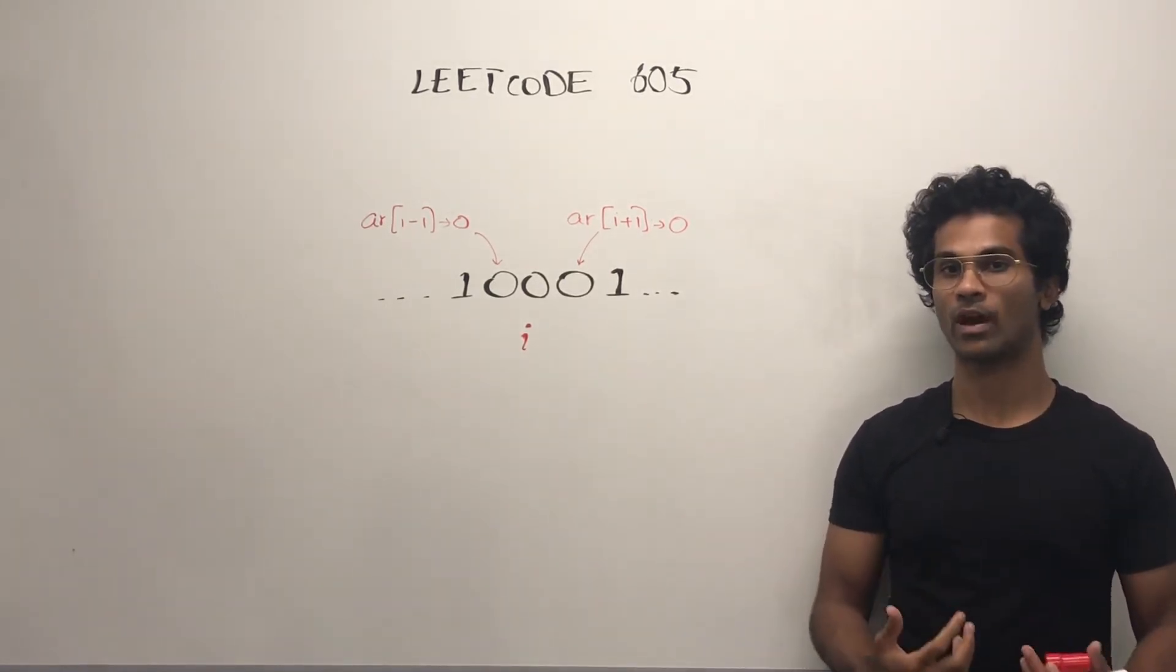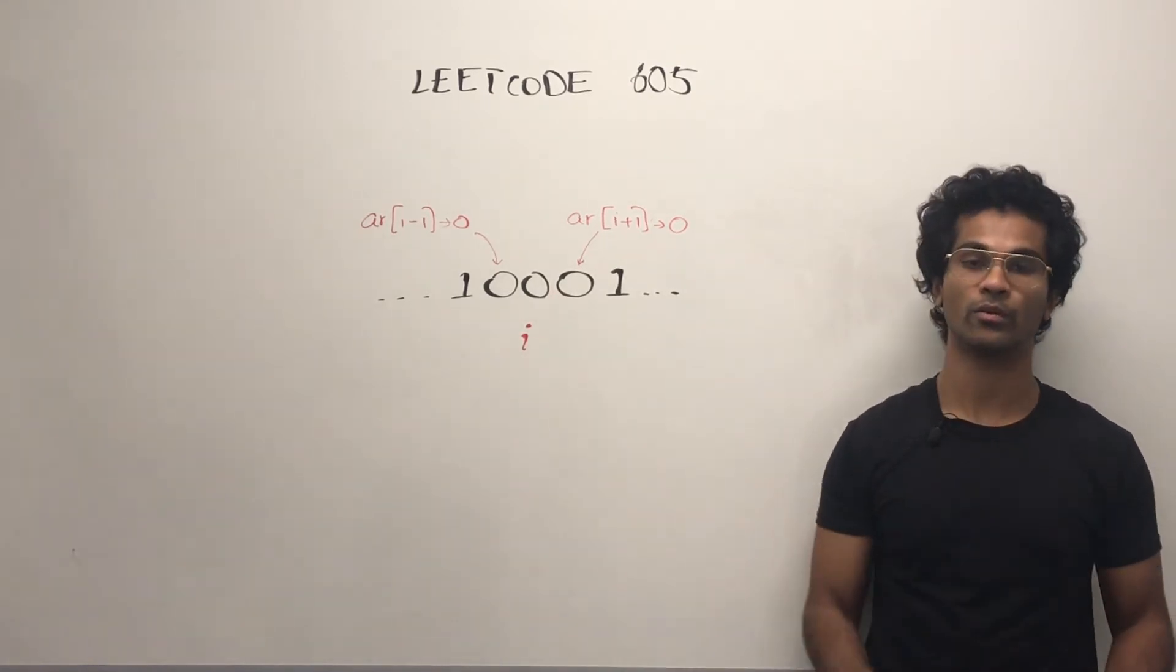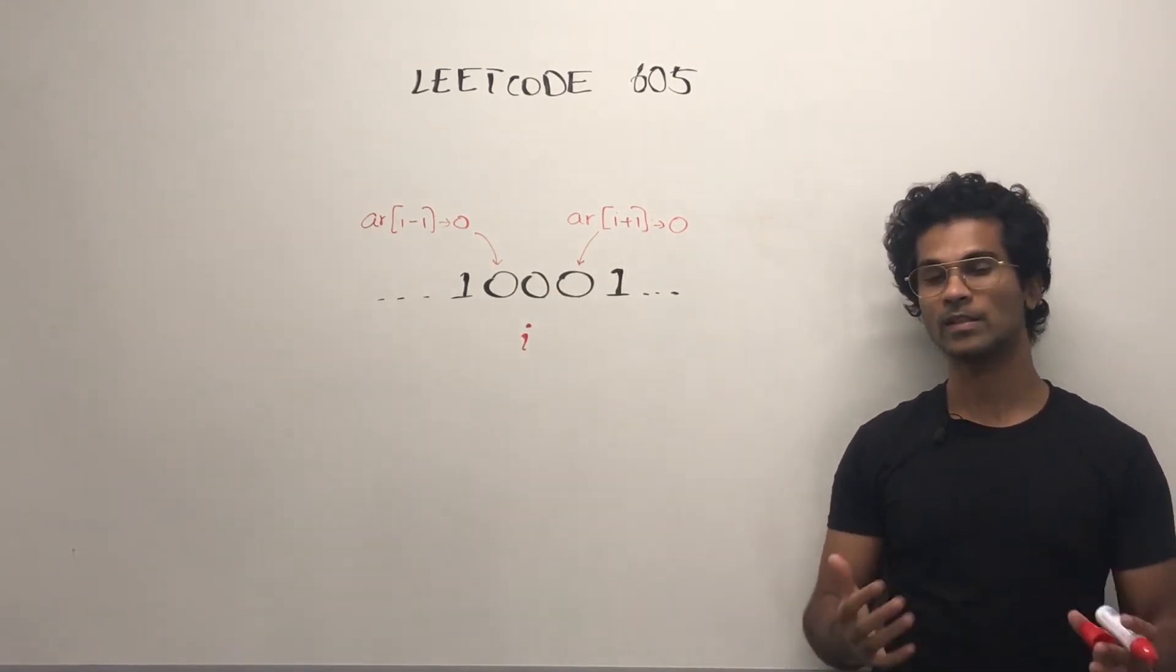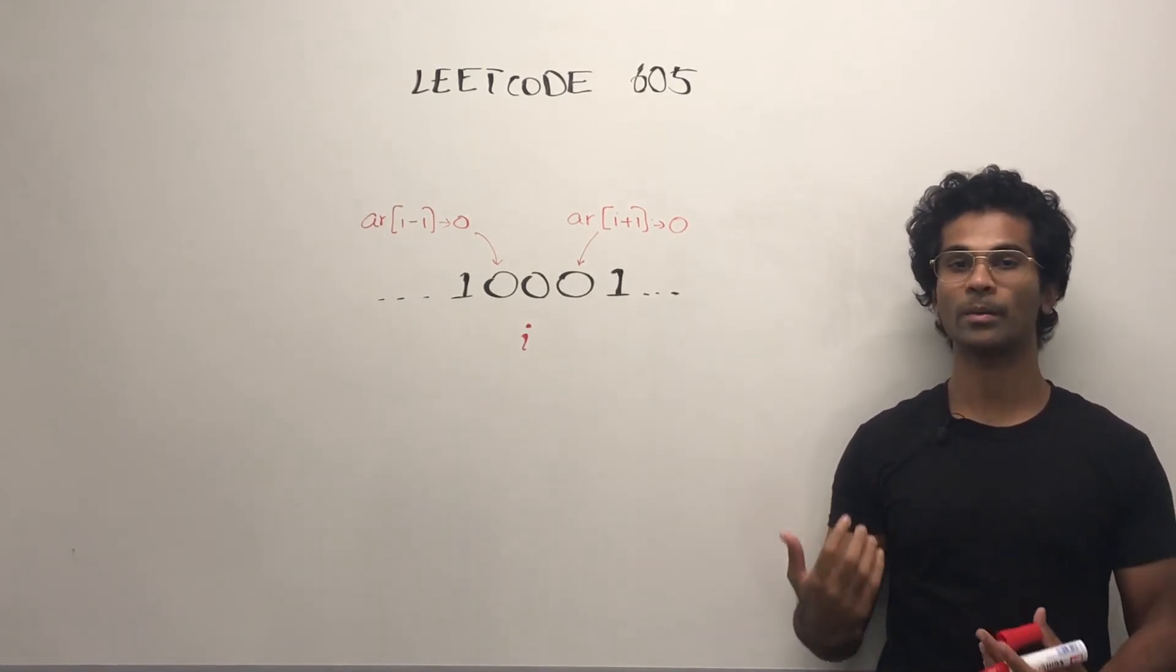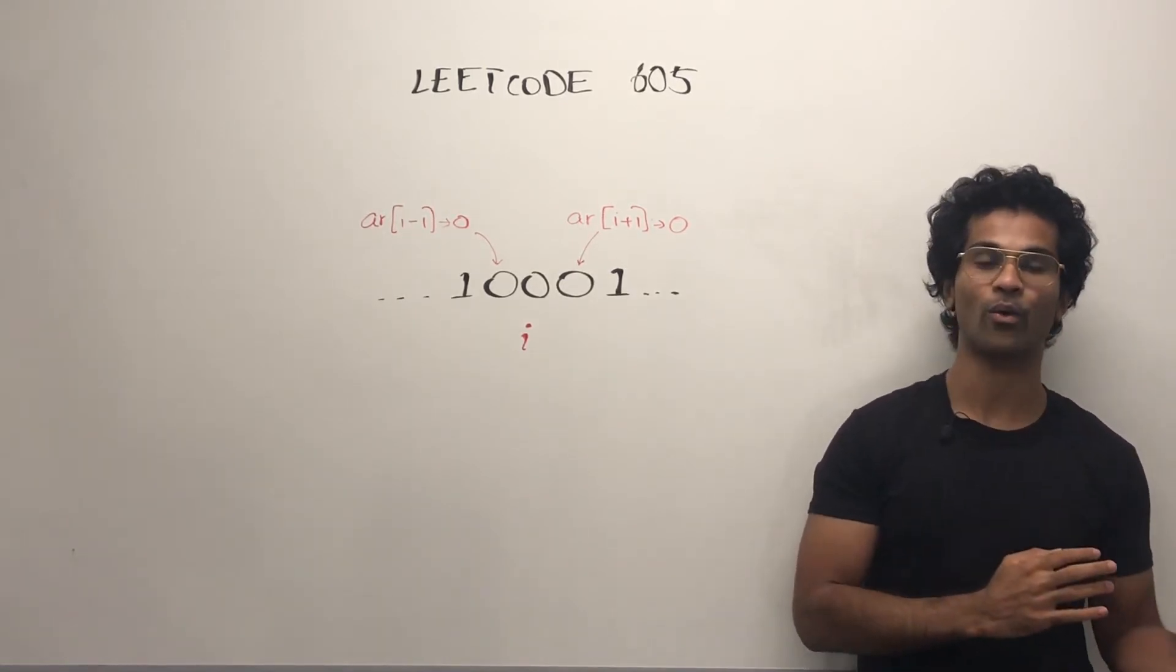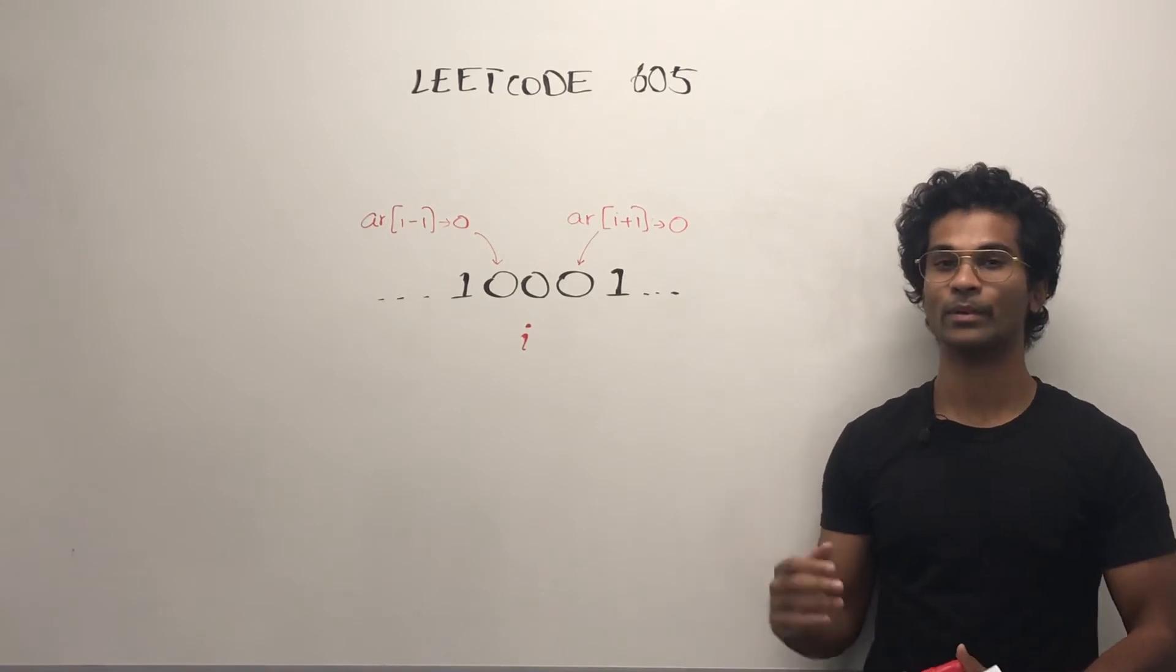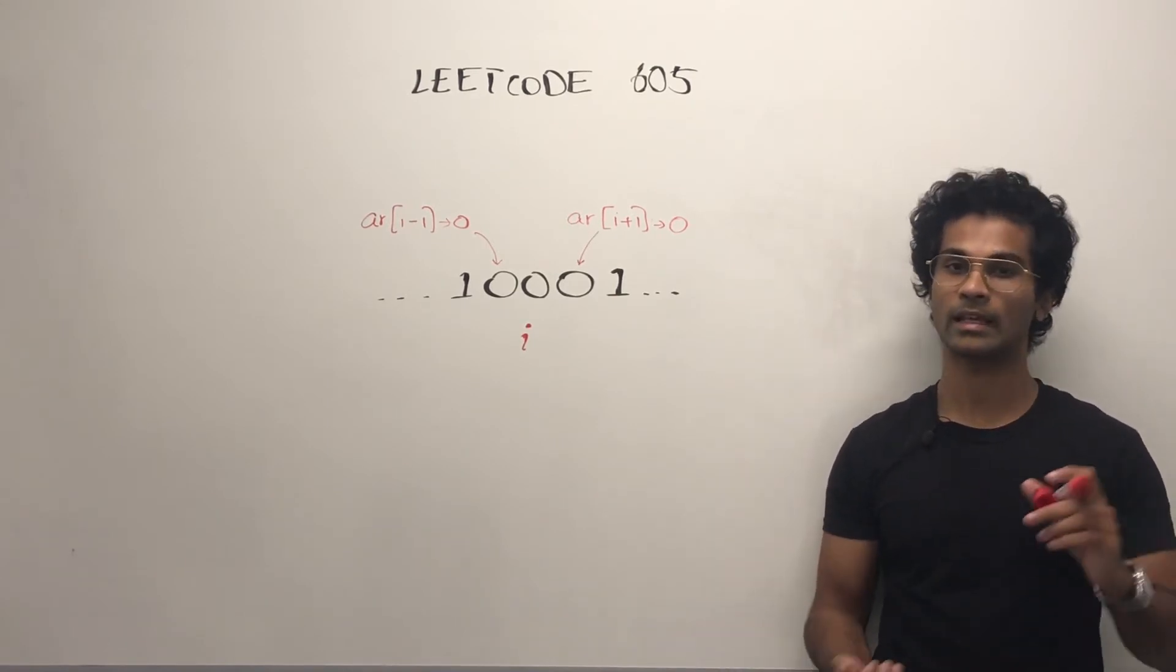Now after we place a flower, we have to convert this 0 to a 1. That's simple. But what about the edge cases? What happens if we are at the end or the beginning of the array and we don't have so many zeros? Let's take a look at that.